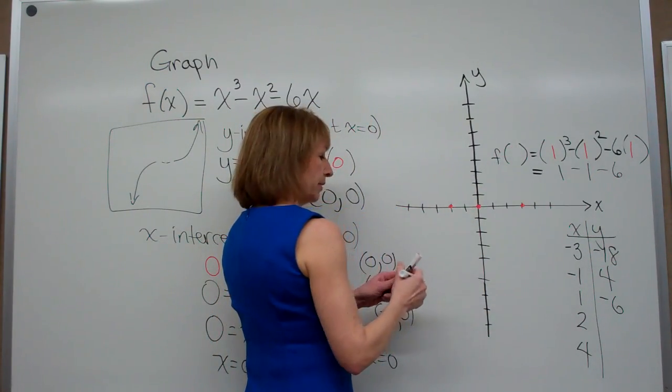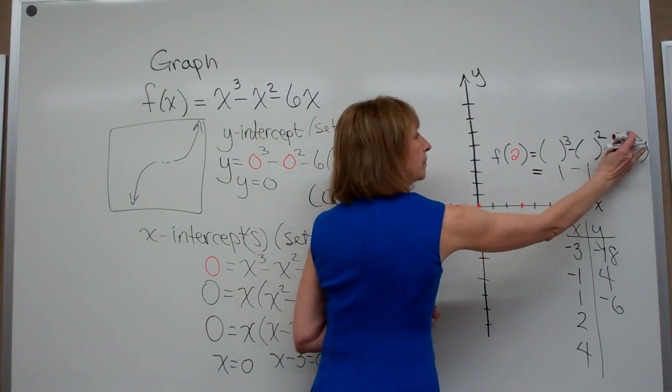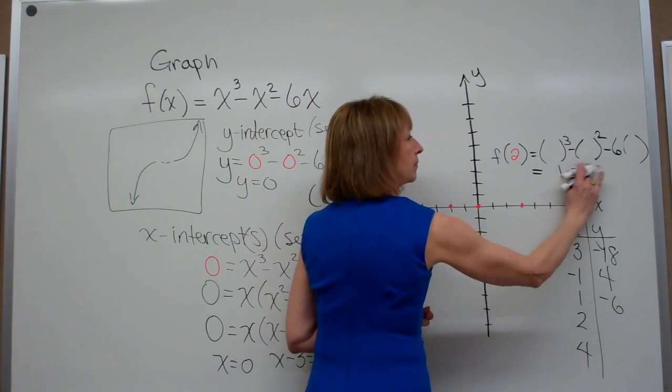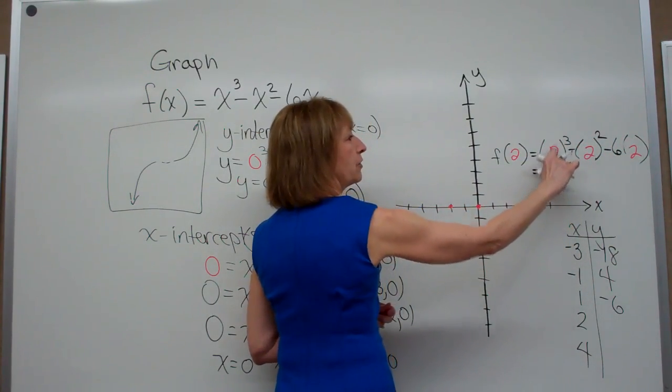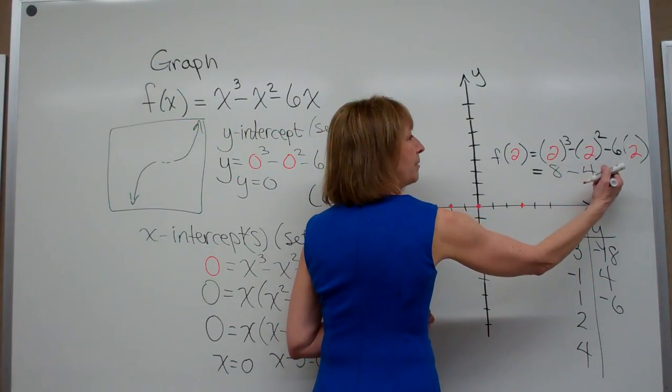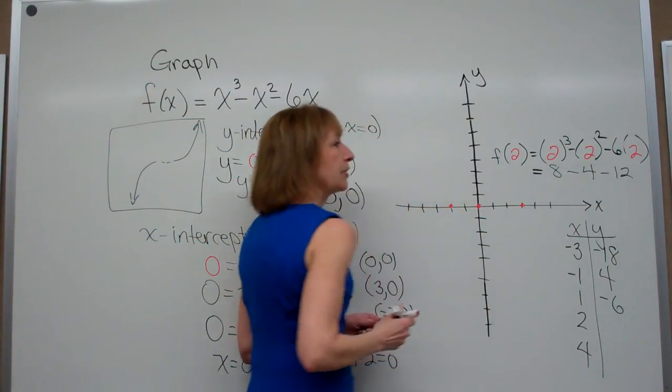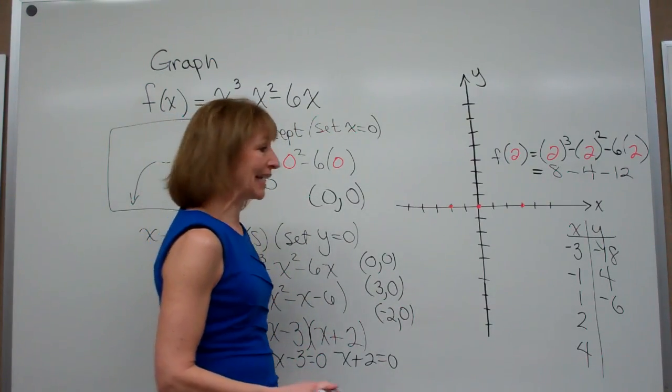When x is 2, we have 2³ = 8, minus 2² = 4, and then -6(2) = -12. So 8 - 4 is 4, and 4 - 12 gives me -8.